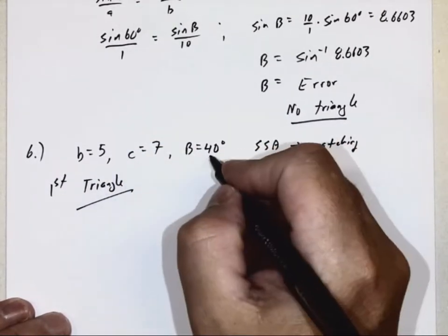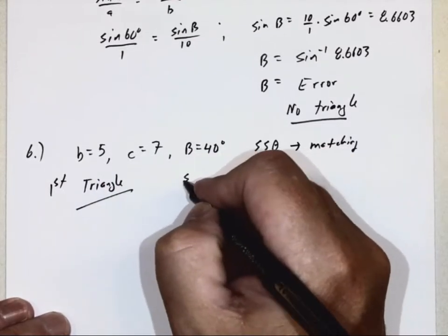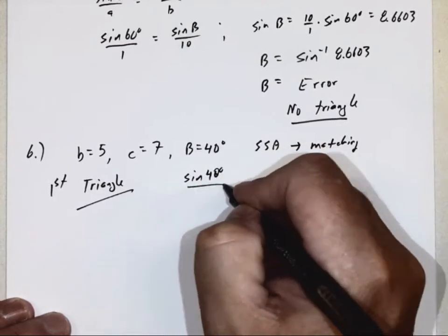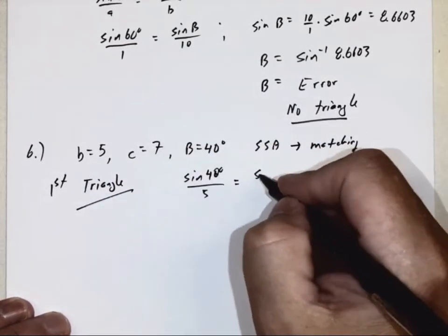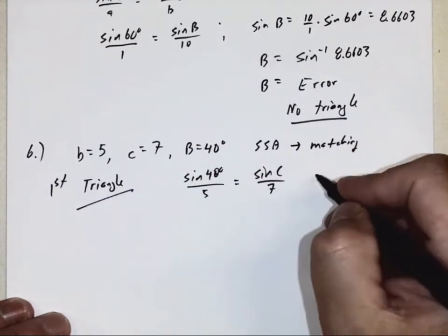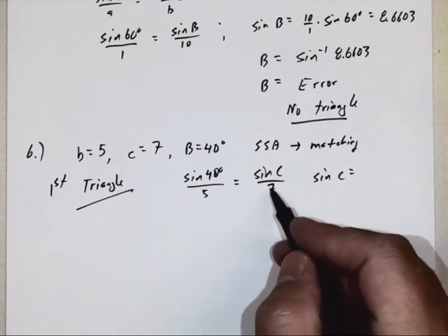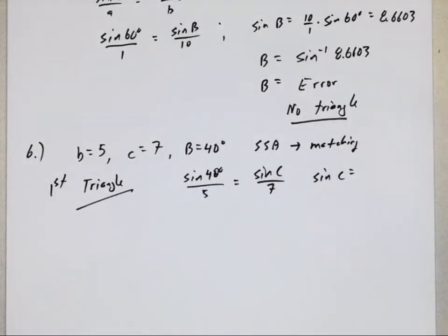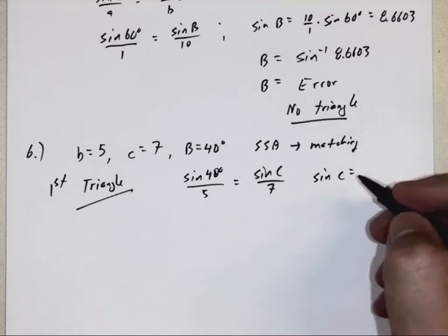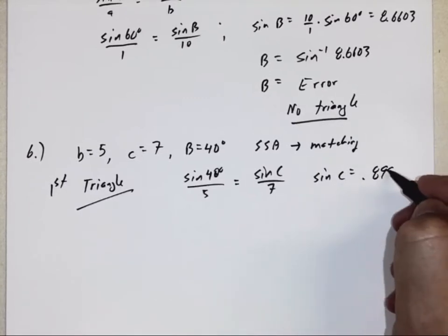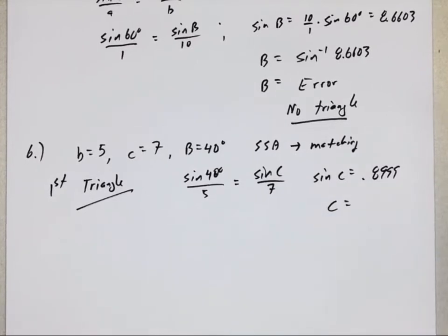So let's do the first triangle. Once again, law of sines. Let's do B and C, it's our only option. So sine of B is 40 degrees over side B, sine of angle C over side C. We've done that so many times, let me go ahead. It's going to be 7 divided by 5 times sine of 40 degrees. 0.8999. Now if I take the inverse sine of that, it says round it to one decimal place, 64.1.